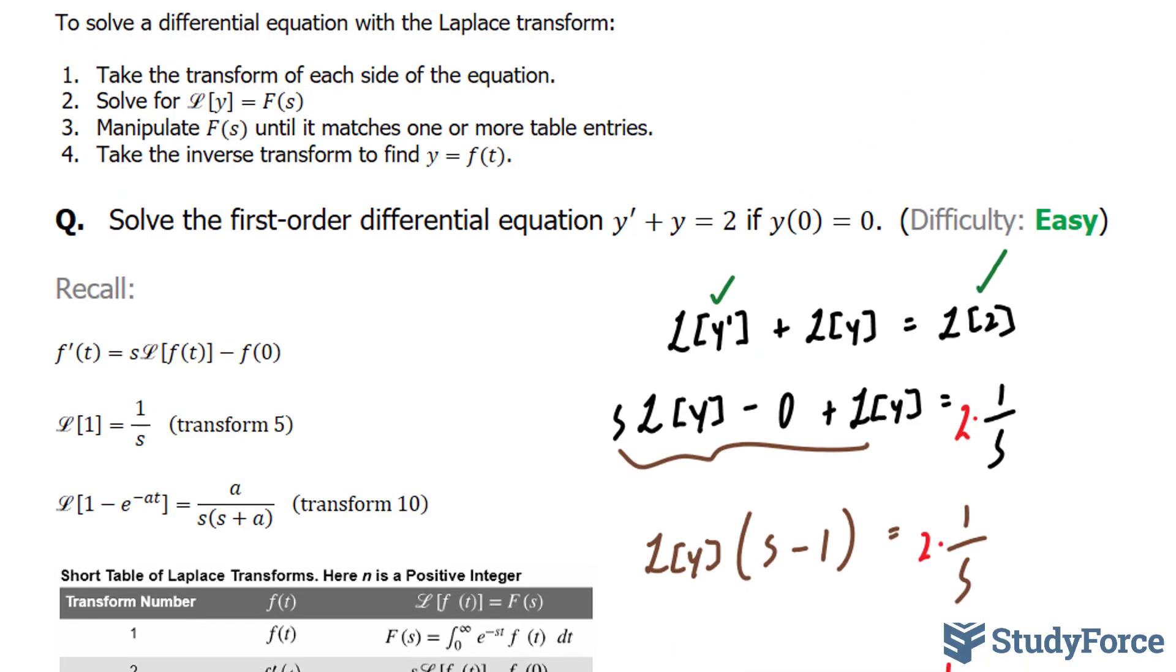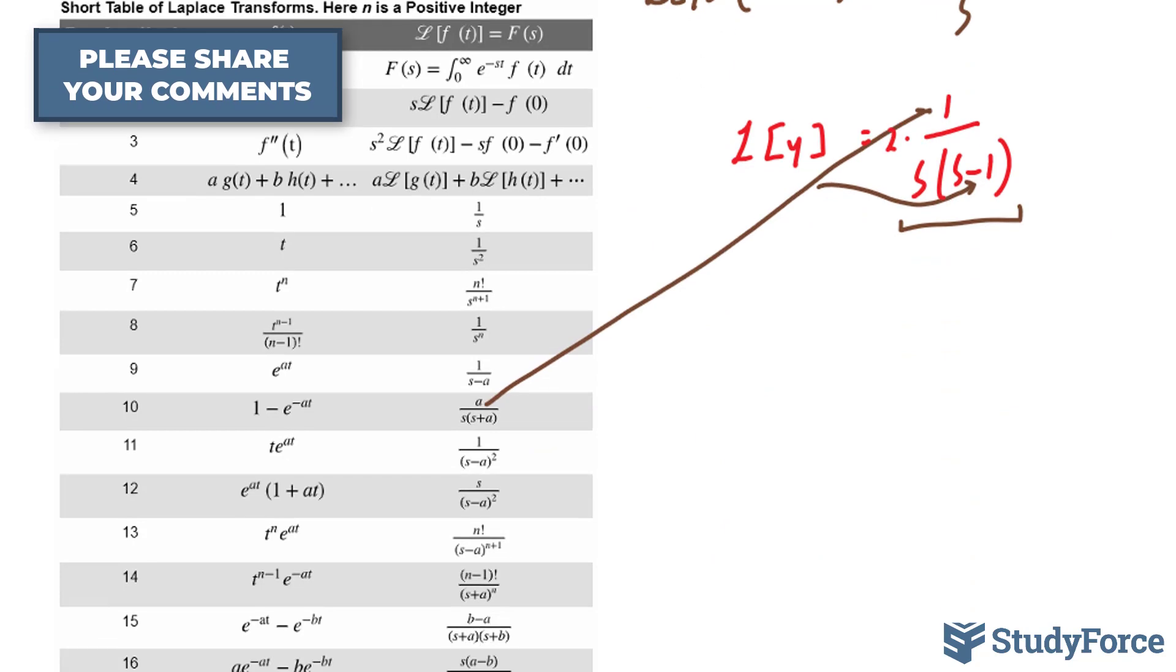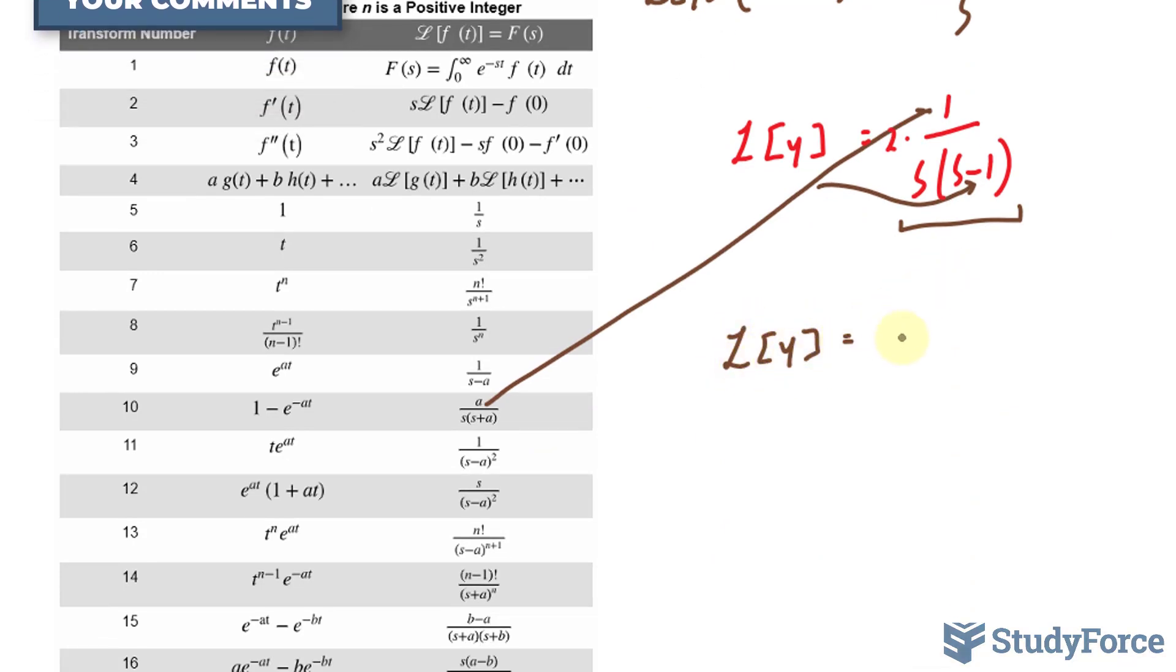This is fulfilling step number four, where we take the inverse transform to find y is equal to f of t. So, let's go ahead and do that. We have the Laplace transform of y is equal to 1 minus e to the power of negative t multiplied to this 2.